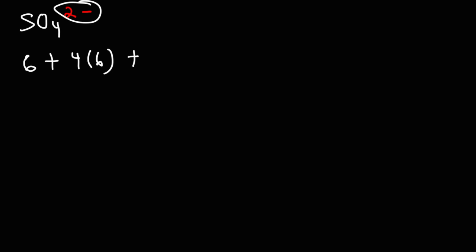And then, because the polyatomic ion has a negative charge, we need to add 2 electrons. So 4 times 6 is 24, plus 6 is 30, plus 2, that's 32.